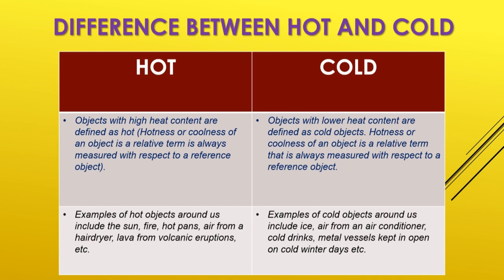If the temperature has crossed a defined level, we call that hot. If the temperature has gone much lower, we call that cold. Examples of hot objects include the sun, fire, hot pans, air from a hair dryer, and lava from volcanic eruptions. Cold objects include ice, air from an air conditioner, cold drinks, and metal vessels kept in the open on cold winter days.